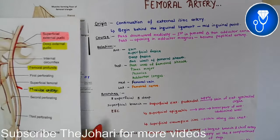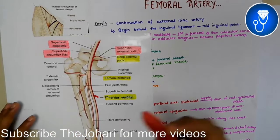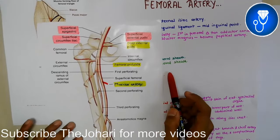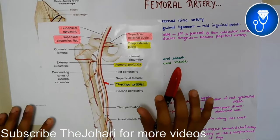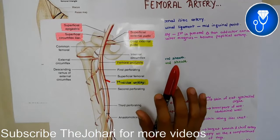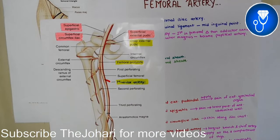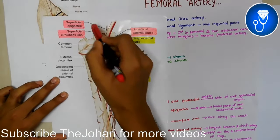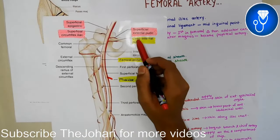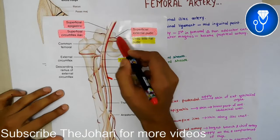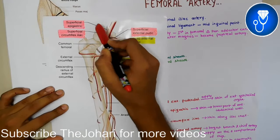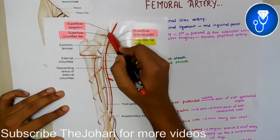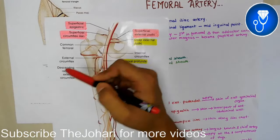First, let's see the femoral artery origin. We know that the common iliac artery is divided into the external and internal iliac artery. The external iliac artery crosses the inguinal ligament, and after crossing, it is called the femoral artery.